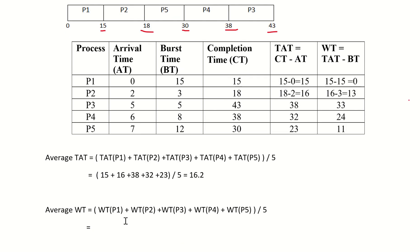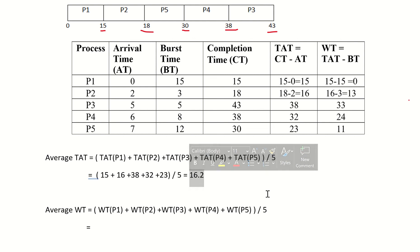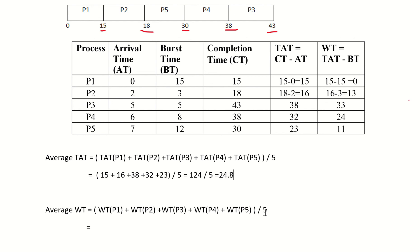Similarly, average waiting time: the waiting times are 0 plus 13 plus 33 plus 24 plus 11, which sums to 81. So 81 divided by 5 equals 16.2. So the average waiting time for non-preemptive priority scheduling is 16.2.